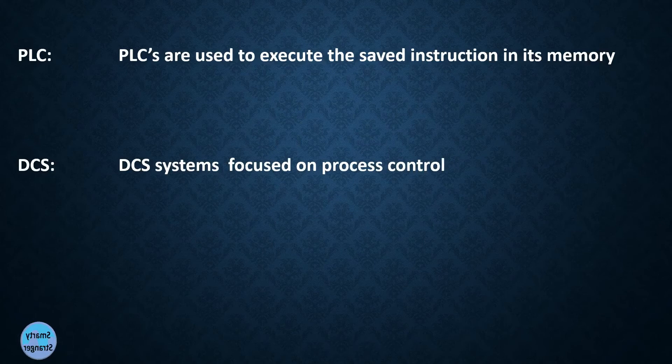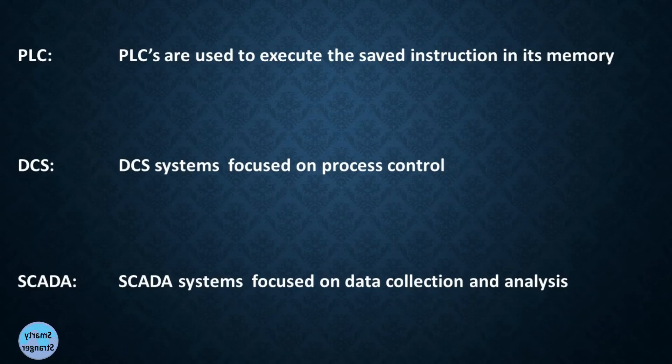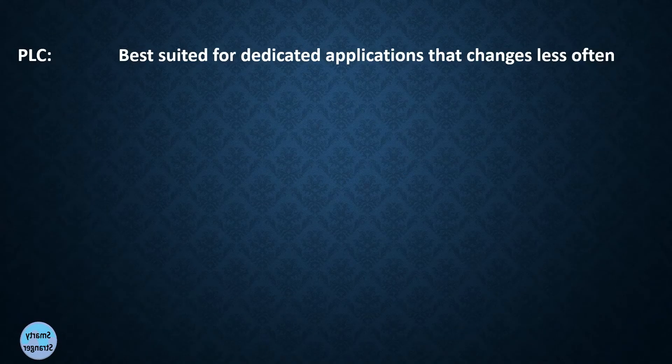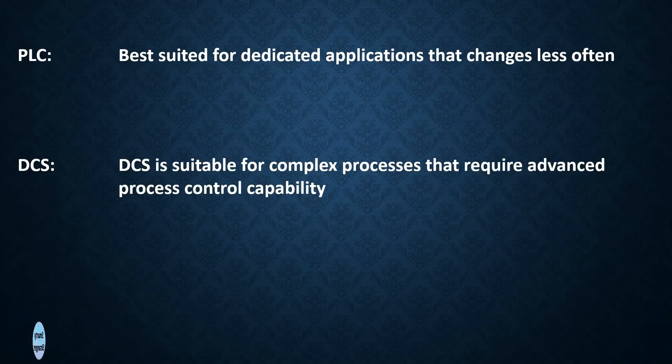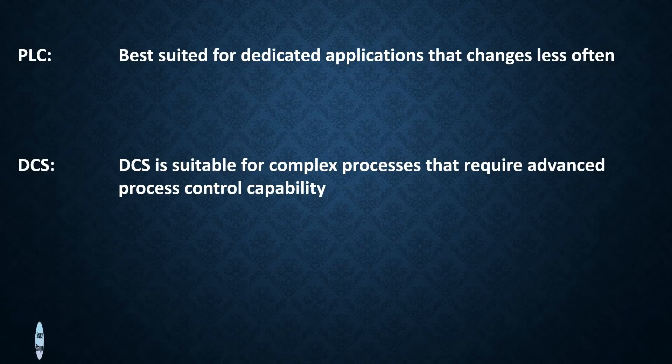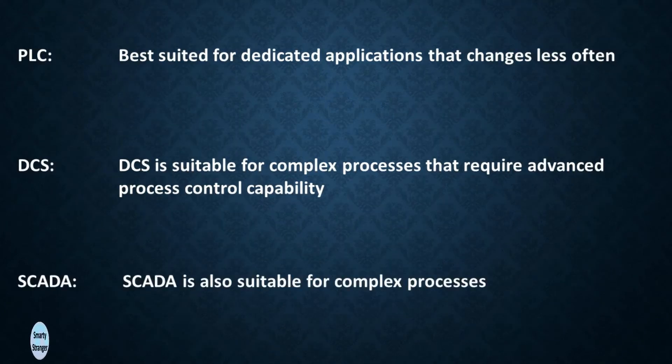DCS systems focus on process control. SCADA systems focus on data collection and analysis. PLC is best suited for dedicated applications that change less often. DCS is suitable for complex processes that require advanced process control capability. SCADA is also suitable for complex processes.